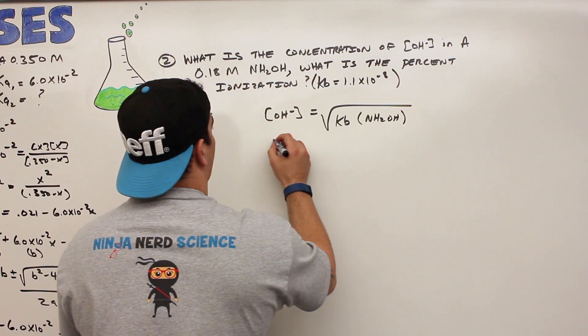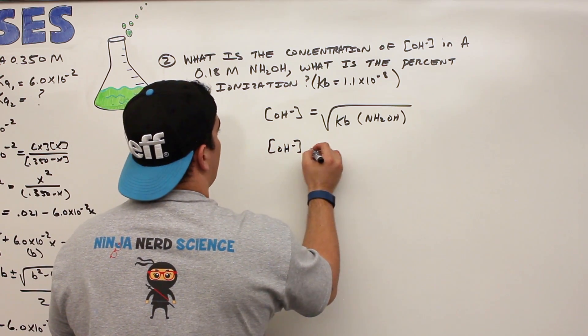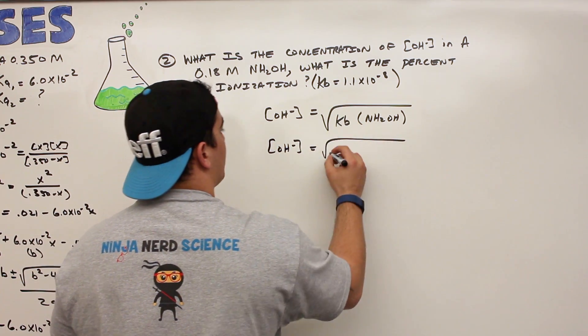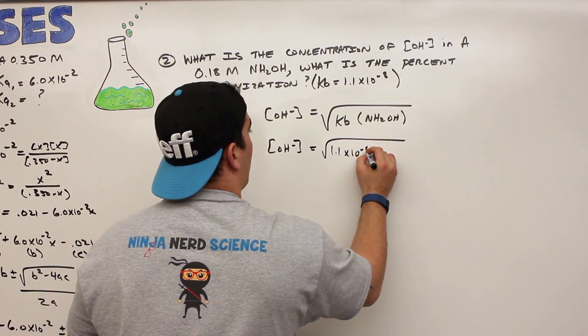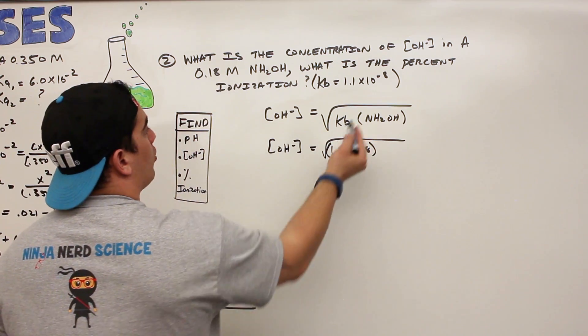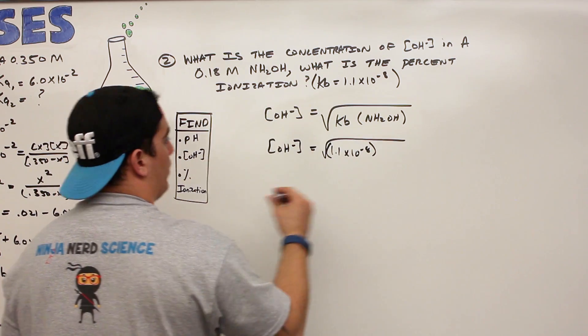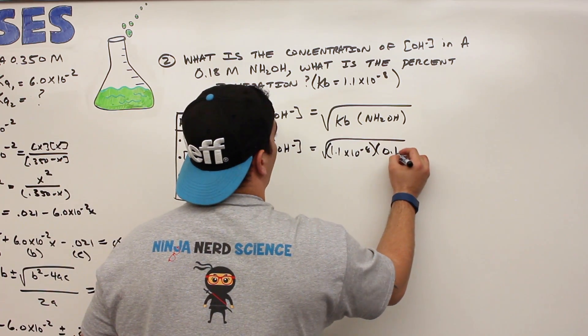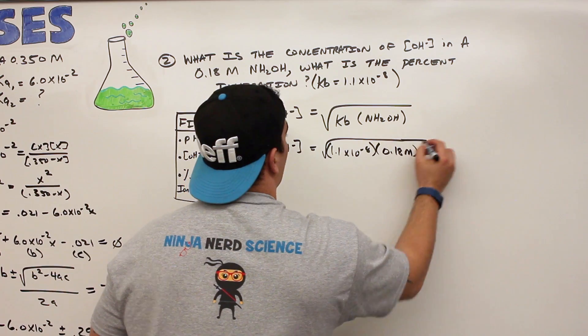So hydroxide ion concentration is equal to the square root of the Kb, which is 1.1 times 10 to the minus 8, and then multiply that by the concentration of this weak base, which is 0.18 molar.